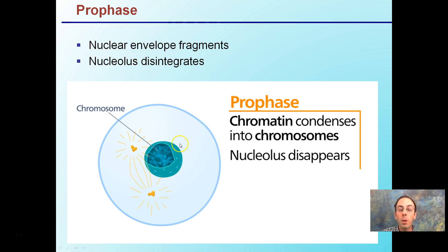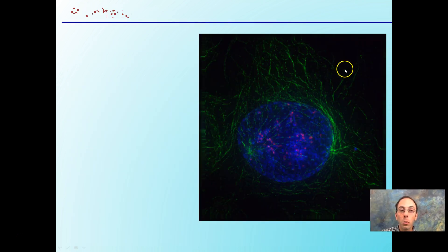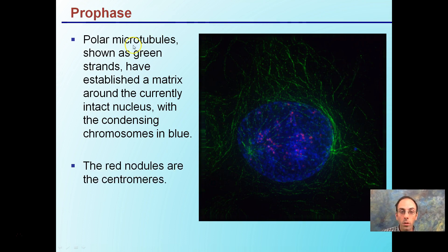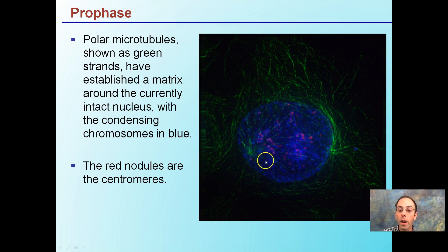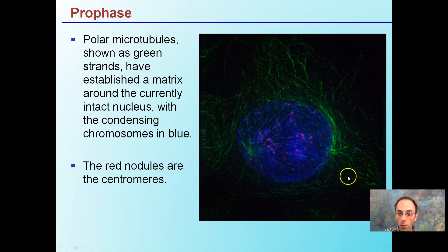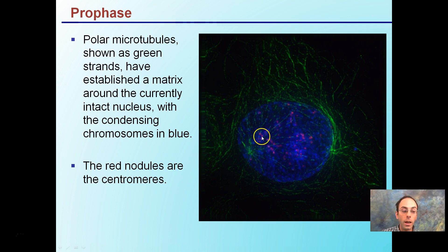We're looking at the nuclear envelope beginning to fragment. The chromatids are condensing, making them more visible. In prophase, polar microtubules, shown in green, are strands that establish a matrix around the currently intact nucleus. This will break down and fragment. The condensing chromosomes are shown in blue, and the pinkish dots are the centromeres, which are involved with DNA.